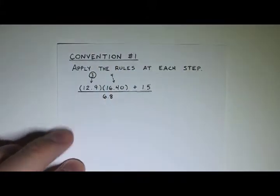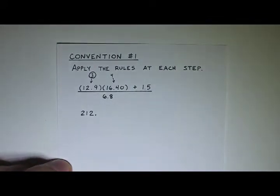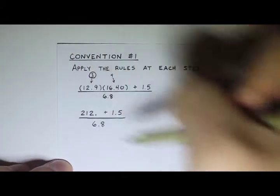So when we do that multiplication, we would get 212. And I want three sig figs, so I'm going to put a decimal point there. Everything else stays the same. Plus 1.5 over 6.8.